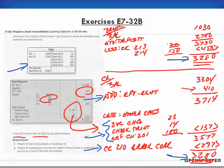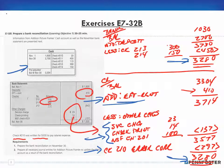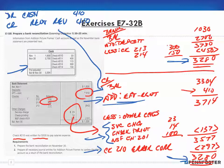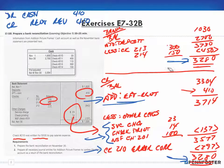For the electronic fund transfer for rent, we received cash, so I debit cash and credit rent revenue for $410. That is my journal entry for the deposit that was not yet on our books. Go ahead and pause the video to write that down.